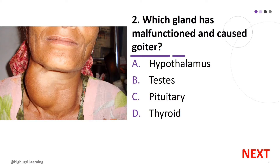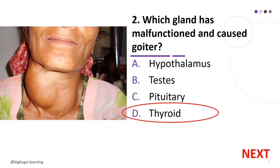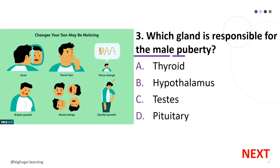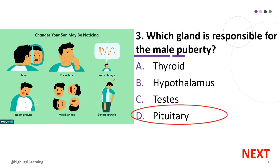Number 2: Which gland has malfunctioned and caused goiter? A. Hypothalamus, B. Testis, C. Pituitary, D. Thyroid. The correct answer is D, Thyroid. Number 3: The correct answer is D, Pituitary.